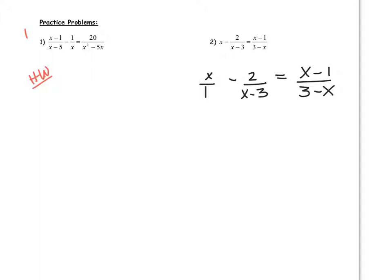And first checking for undefined values, I can see that this x value would have to be 0. Excuse me, it would have to be 3. 3 minus 3 would give me 0. So we can say undefined at 3. Same thing here. 3 minus 3 would give me 0. So if I get 3, we'll have to reject it.